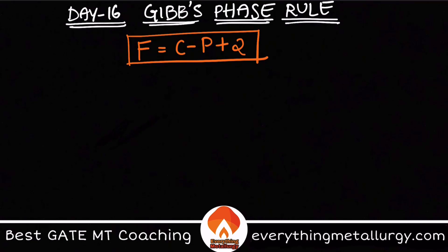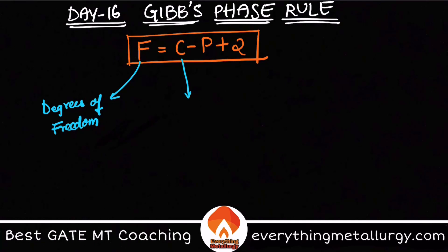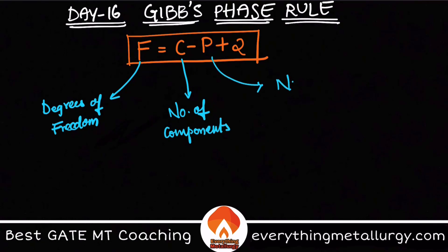What are these different variables F, C, and P? F is nothing but my degrees of freedom, C is the number of components, and P is the number of phases that are present in my system. We will go through each one by one — degrees of freedom, number of components, and number of phases.